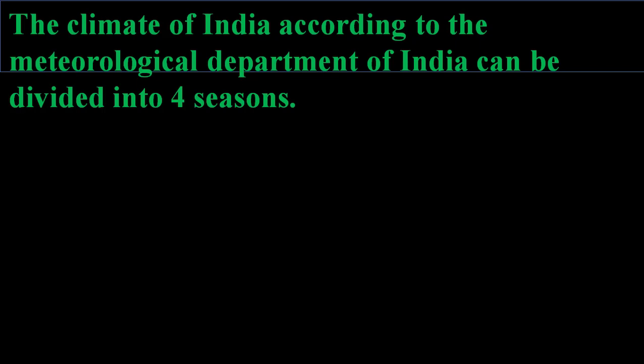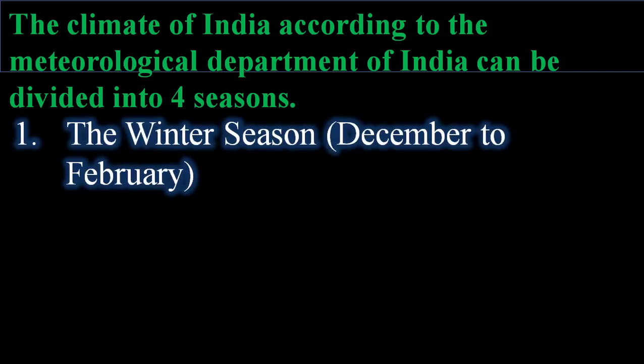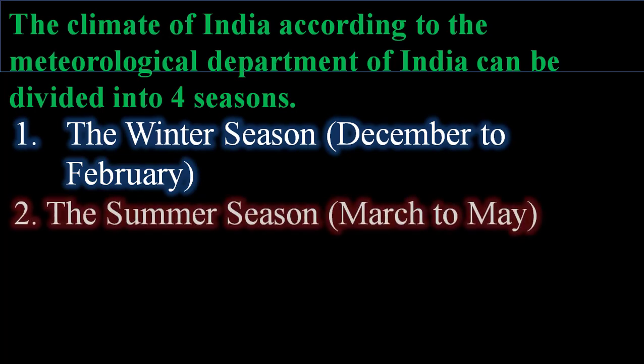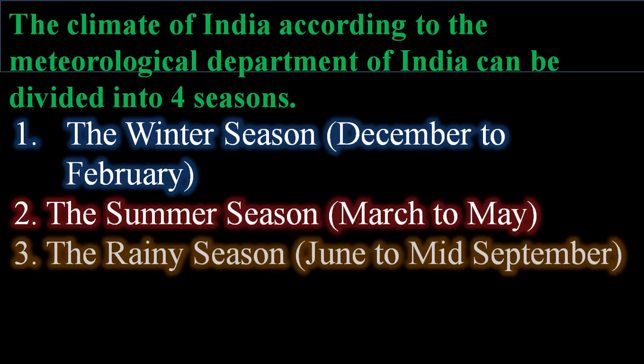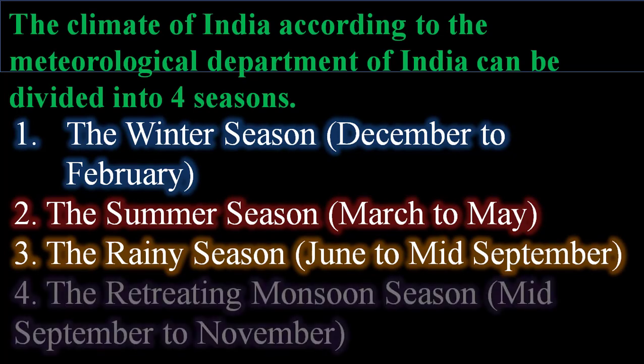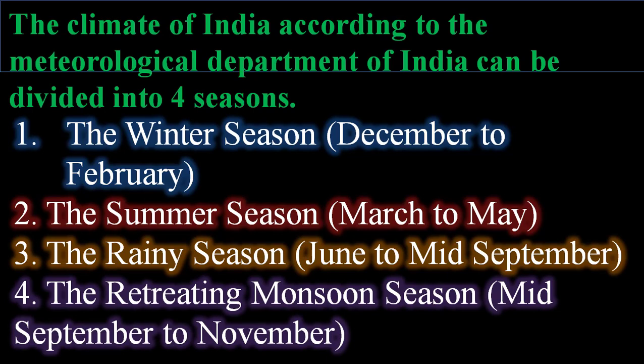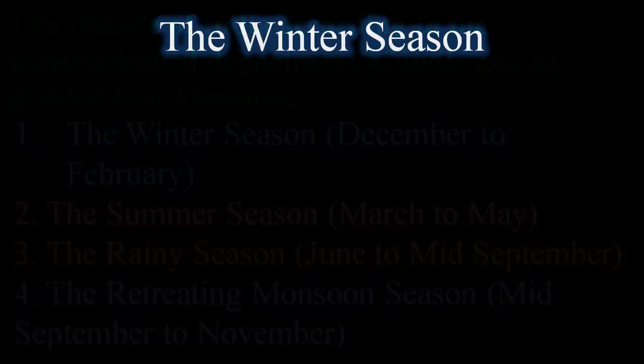According to the Meteorological Department of India, the climate can be divided into four seasons: the winter season from December to February, the summer season from March to May, the rainy season from June to mid-September, and the retreating monsoon season from mid-September to November.